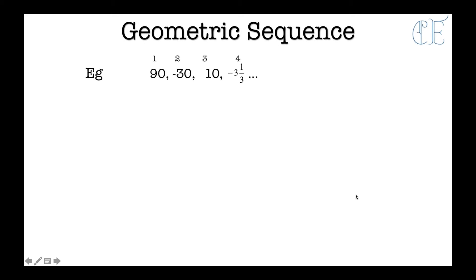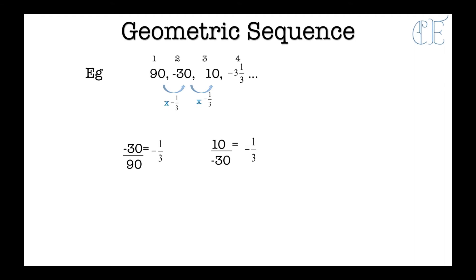Here's another geometric sequence. We have 90, minus 30, 10, and minus 3 and a third. So what's happened here? Minus 30 divided by 90 is minus a third. And 10 divided by minus 30 is minus a third. And minus 3 and a third divided by 10 is minus a third. So here our common ratio is minus one third.